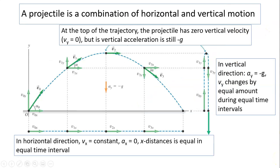A projectile is a combination of horizontal and vertical motion. In a horizontal direction, v-x is constant. This is because there is no horizontal acceleration, because there is no horizontal force. So x distance is the same in the same time interval.